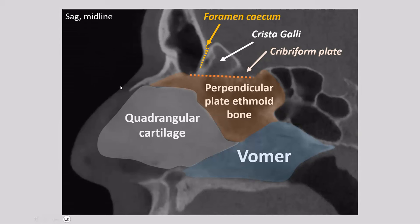Let's start with the sphenoethmoidal recess. We can see it over here with arrows drawn. It is basically a small connection connecting the sphenoid sinuses to the olfactory recess of the nasal cavity, and they drain into the superior meatus as shown on the sagittal image. We can also see the sphenoethmoidal recess on the sagittal image. The sphenoethmoidal recess drains the sphenoid sinuses and the posterior ethmoid cells. What's the difference between the posterior and anterior ethmoid cells? That's what the next slide is about.